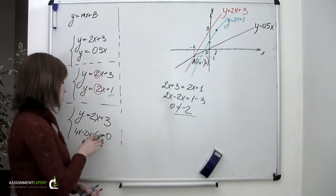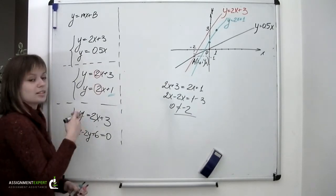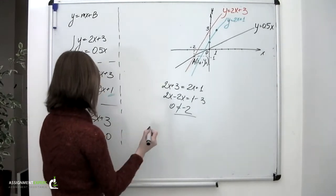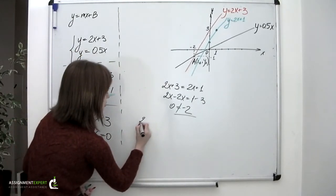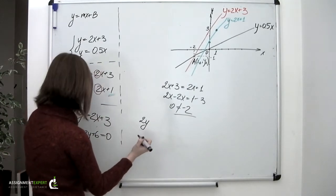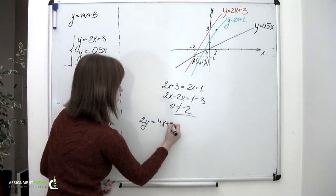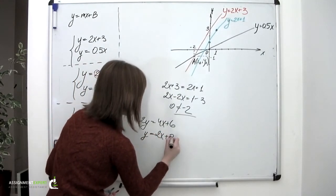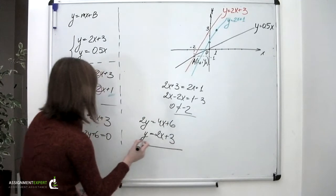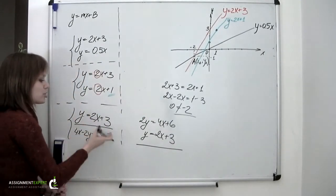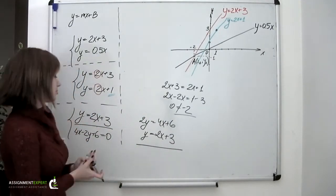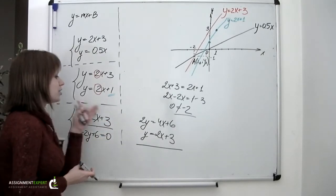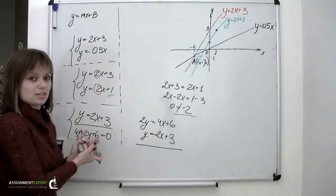Let us first reduce the second equation to the slope-intercept form. So here it goes. We go 2y equals 4x plus 6. Or y equals 2x plus 3. And what do we have now? It turns out that these two equations are equal. This means that the lines they represent coincide.